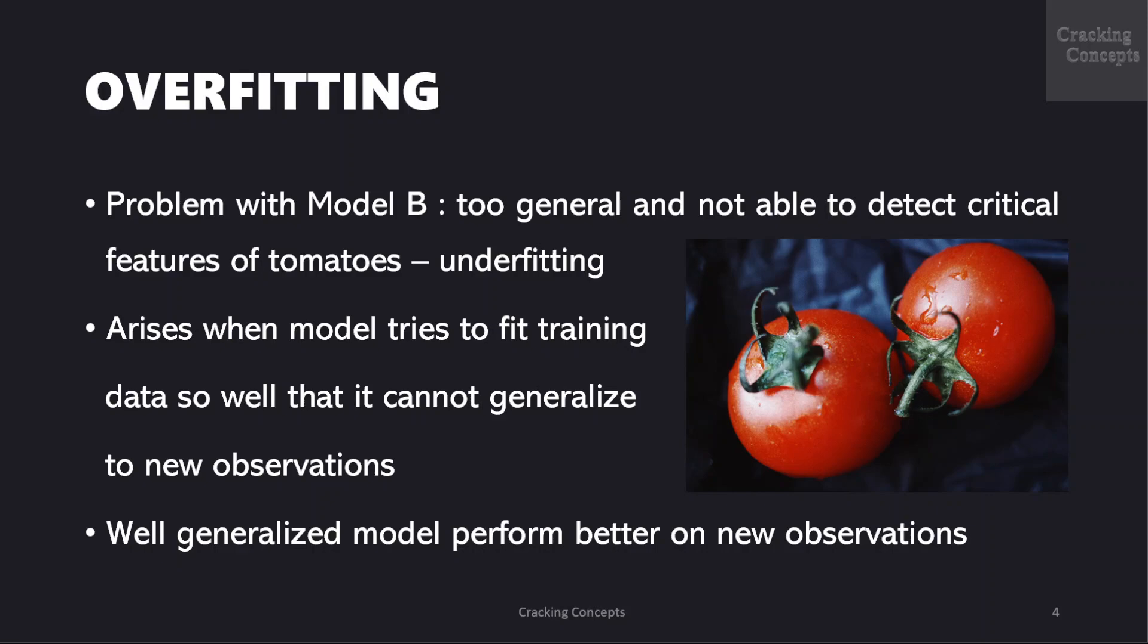On the other hand, model B thinks that everything that is red and has a circle shape is a tomato which is not true. This model is too general and is not able to detect the critical features of tomatoes. So this is called underfitting.